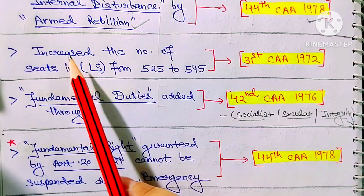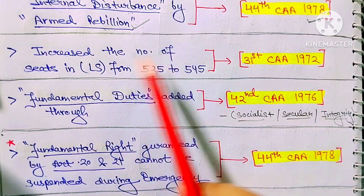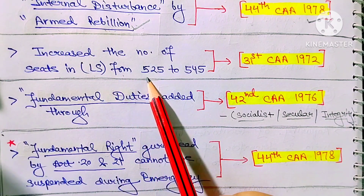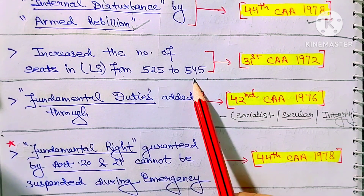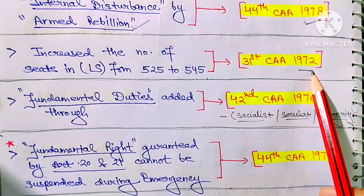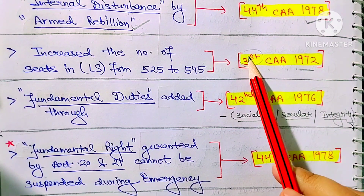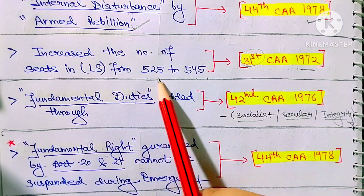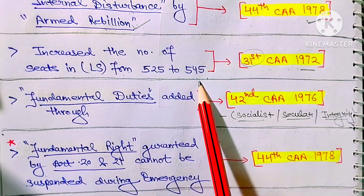Next: the number of seats in the Lok Sabha was increased from 525 to 545 through the 31st Constitution Amendment Act 1972. Through this amendment act, the Lok Sabha seats were increased from 525 to 545.